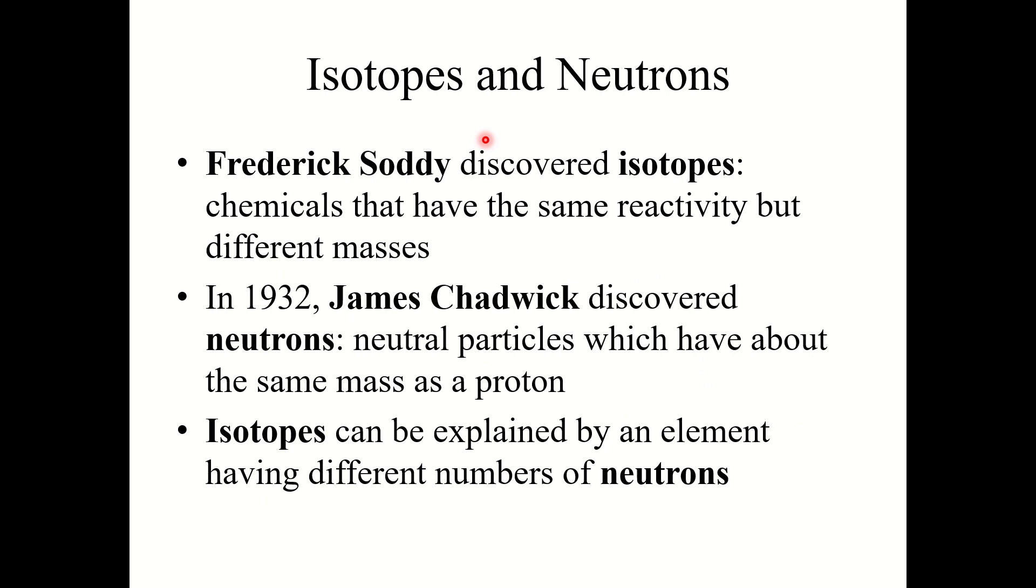A few more major experiments. Next, Frederick Soddy, he discovered isotopes. So he discovered that there are some chemicals that have the exact same reactivity, but they have different masses. Then in 1932, James Chadwick, he discovered neutrons. So these are neutral particles which have about the same mass as a proton. So his discovery of neutrons helps explain Soddy's discovery of isotopes. Isotopes can be explained by an element that has different numbers of neutrons.